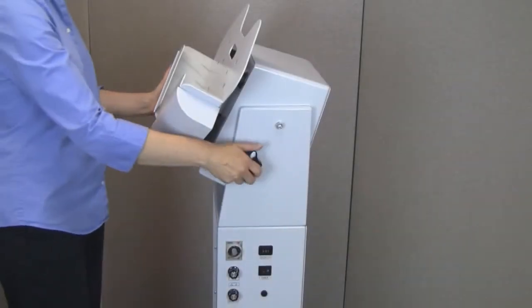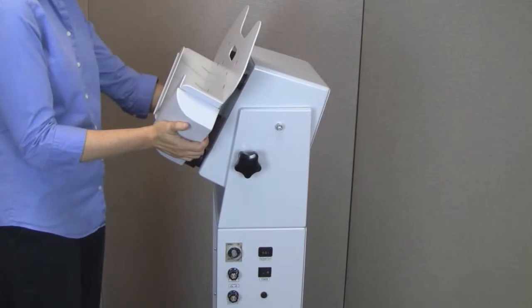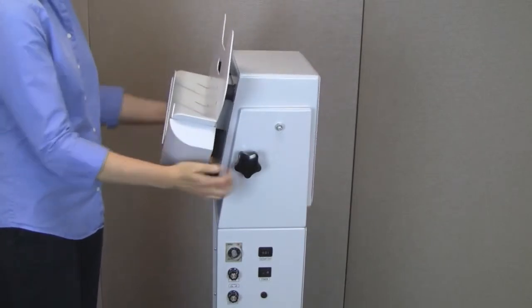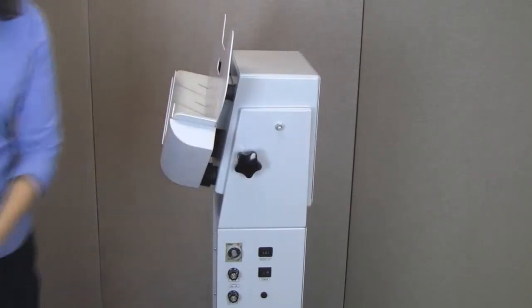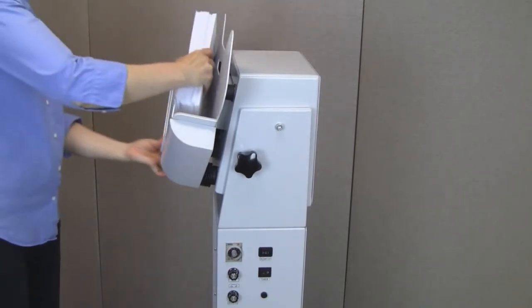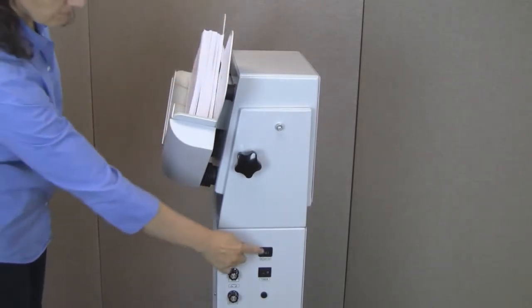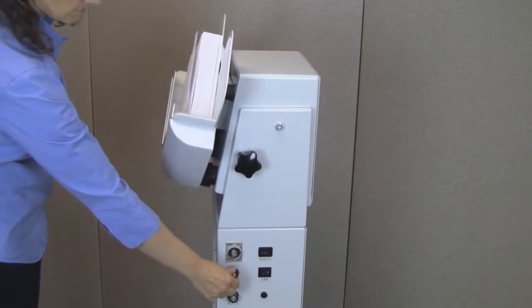To operate, adjust the paper tray, load the paper, and press the power switch to on. Then, adjust the vibration and airflow.